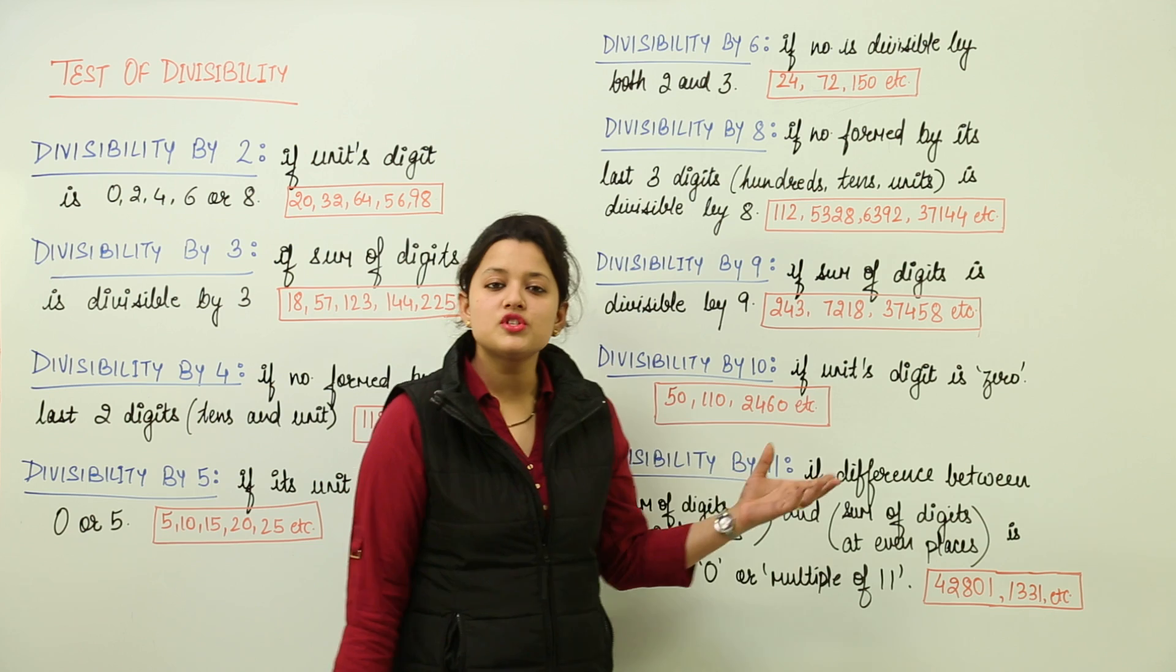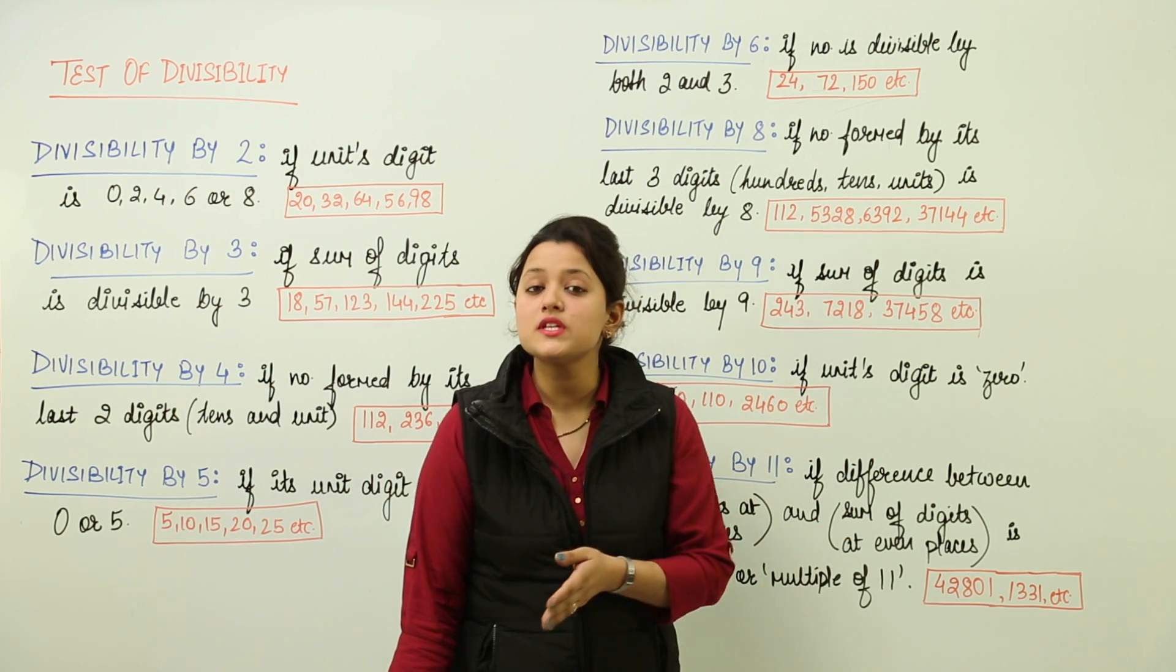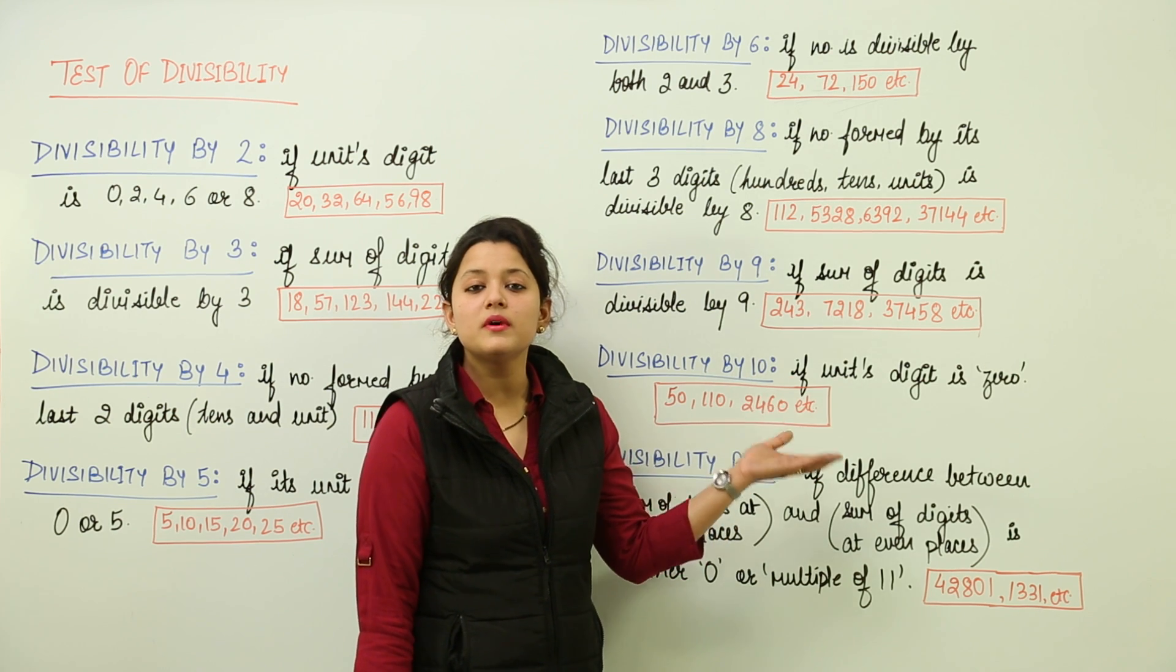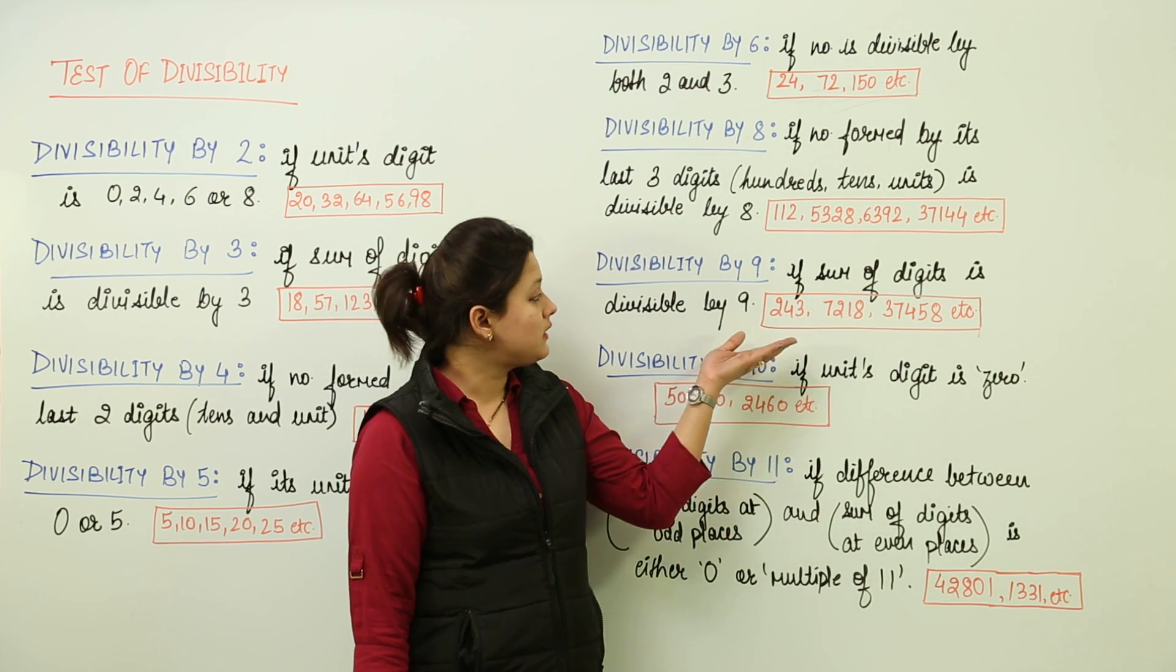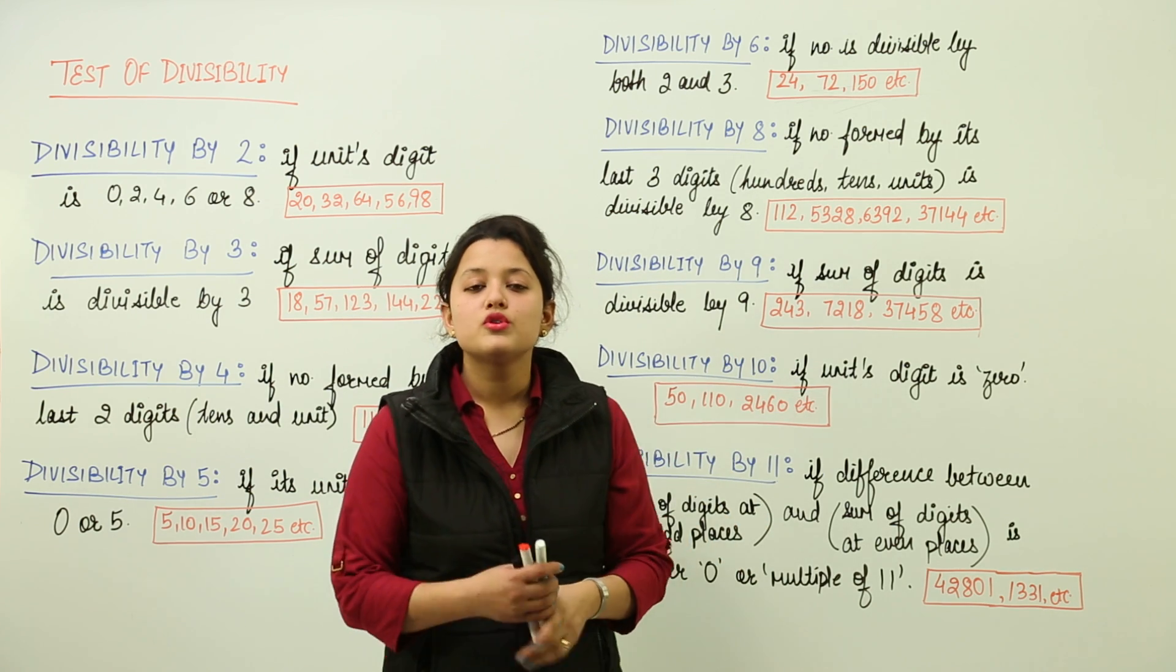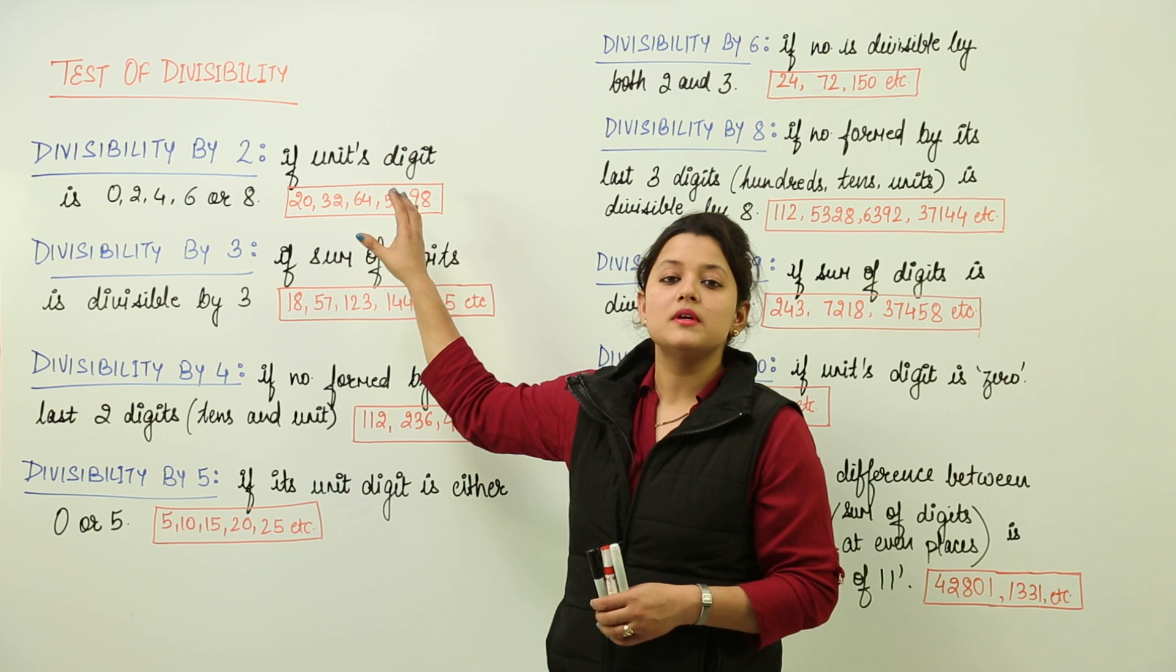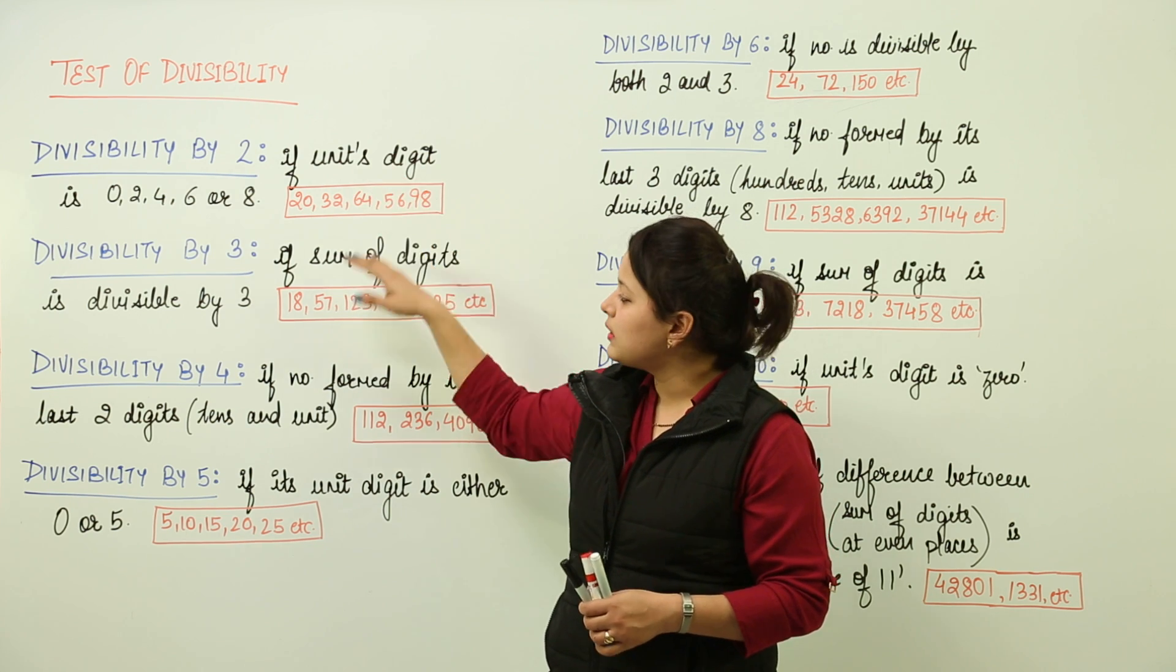11, by which number is it divisible. You can have questions in which you are given a number and you have to check whether the given number is divisible by 10 or not, by 2 or not, and so on. For that, you must understand how to check whether a given number is divisible by these particular numbers.